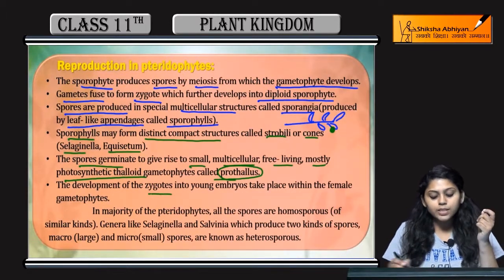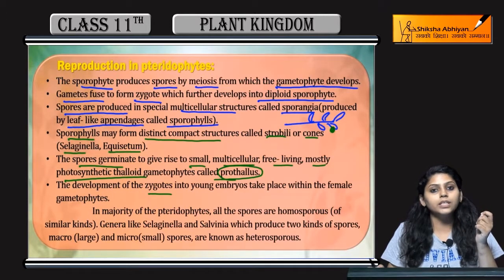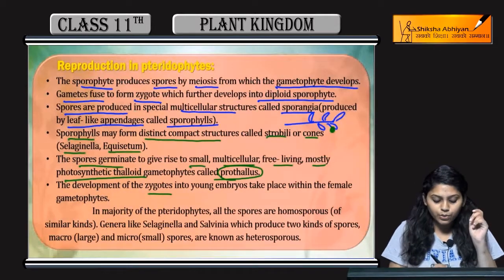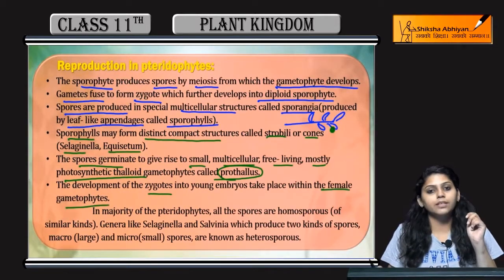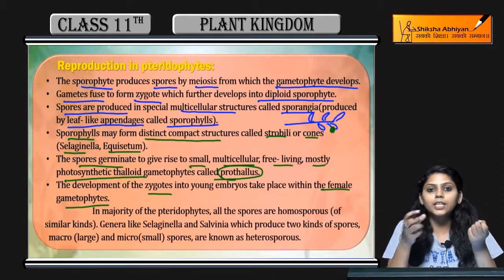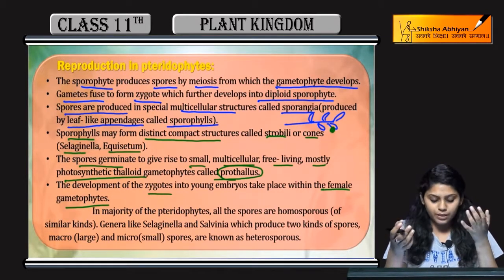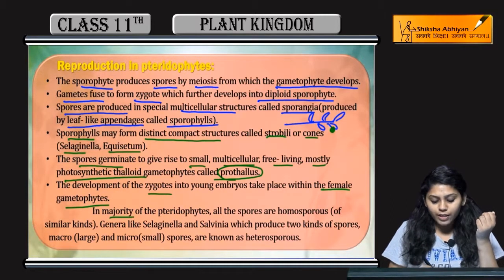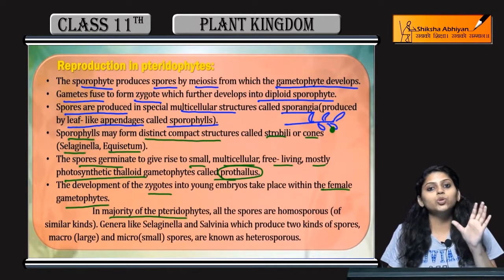Development occurs from the zygote into the female gametophyte. Embryo development takes place within the female gametophytic body in the majority of pteridophytes.